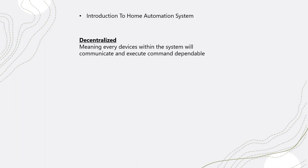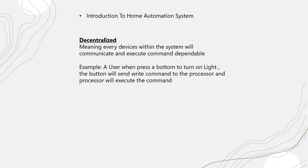In decentralized systems, it's the opposite. Each and every device communicates directly to any other device within the system without requiring the signal to pass through a central processor. For instance, if you want to turn on the light in your room, you press the button or use your mobile phone app and it goes directly to the actuator responsible for turning on the light, switching off the HVAC system, or opening and closing the curtains.